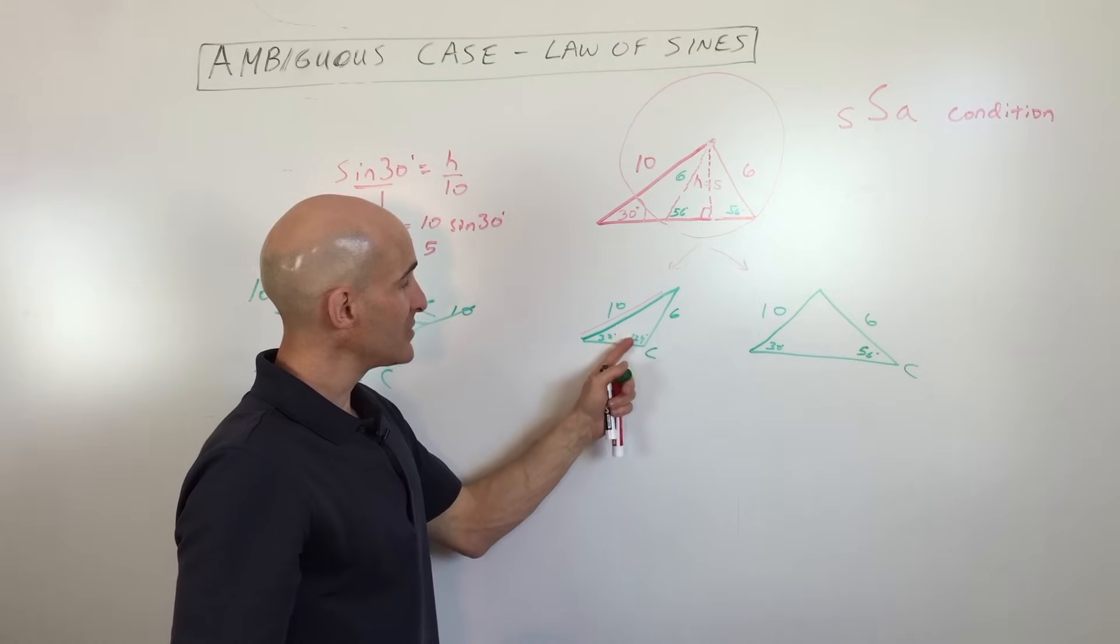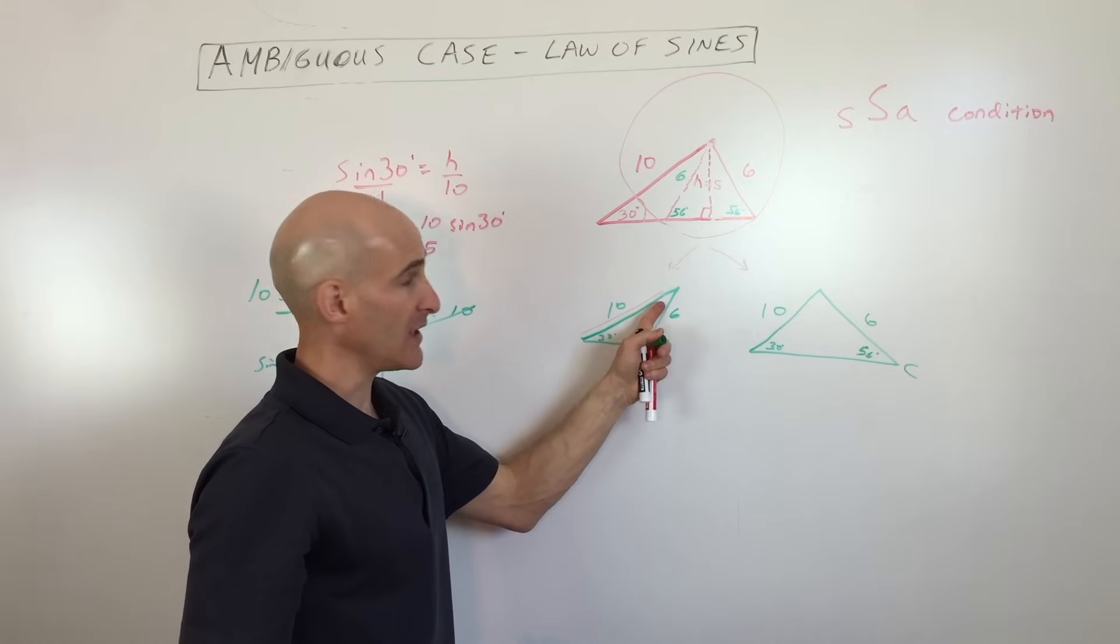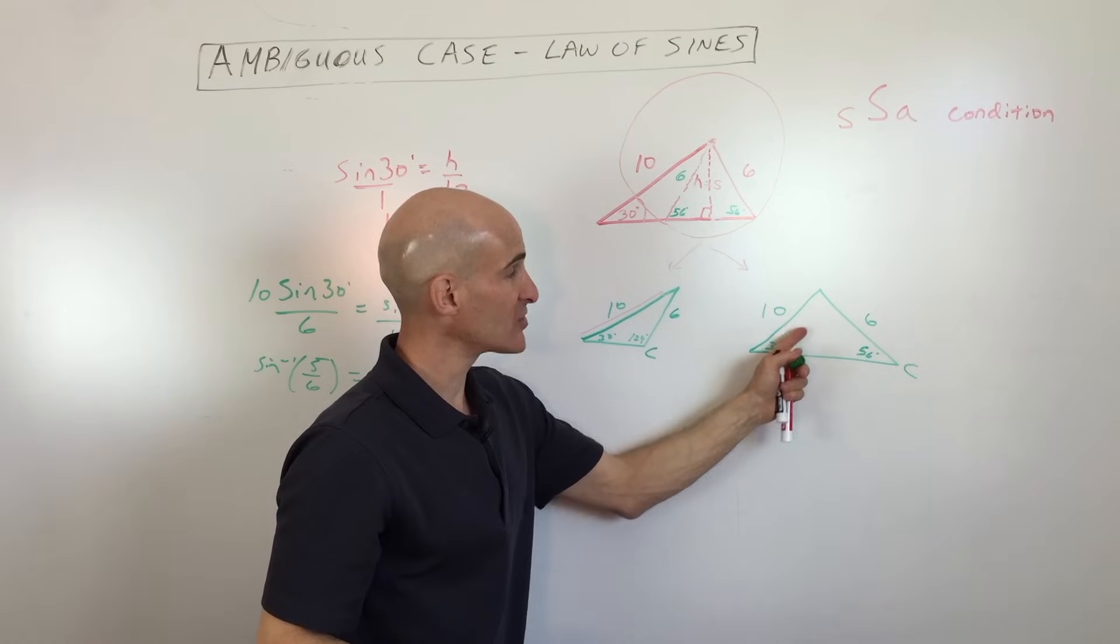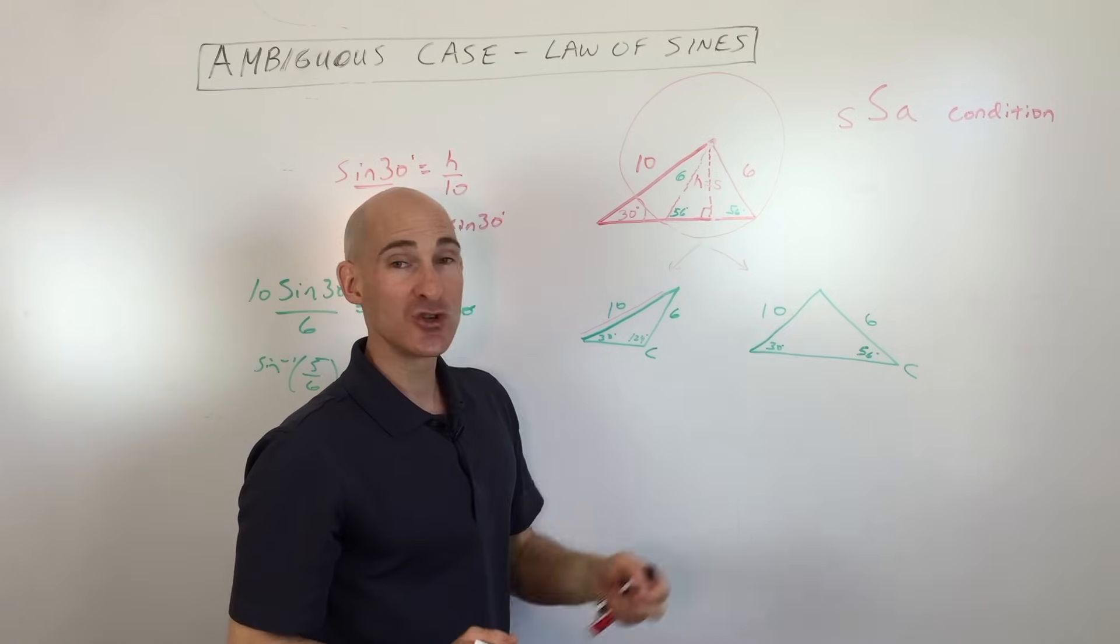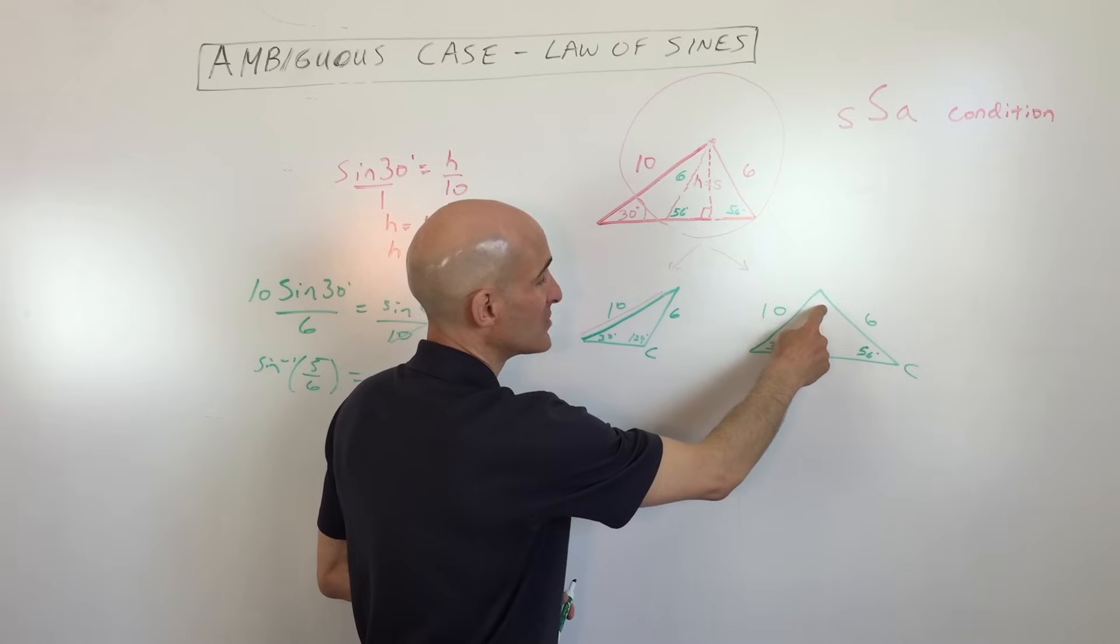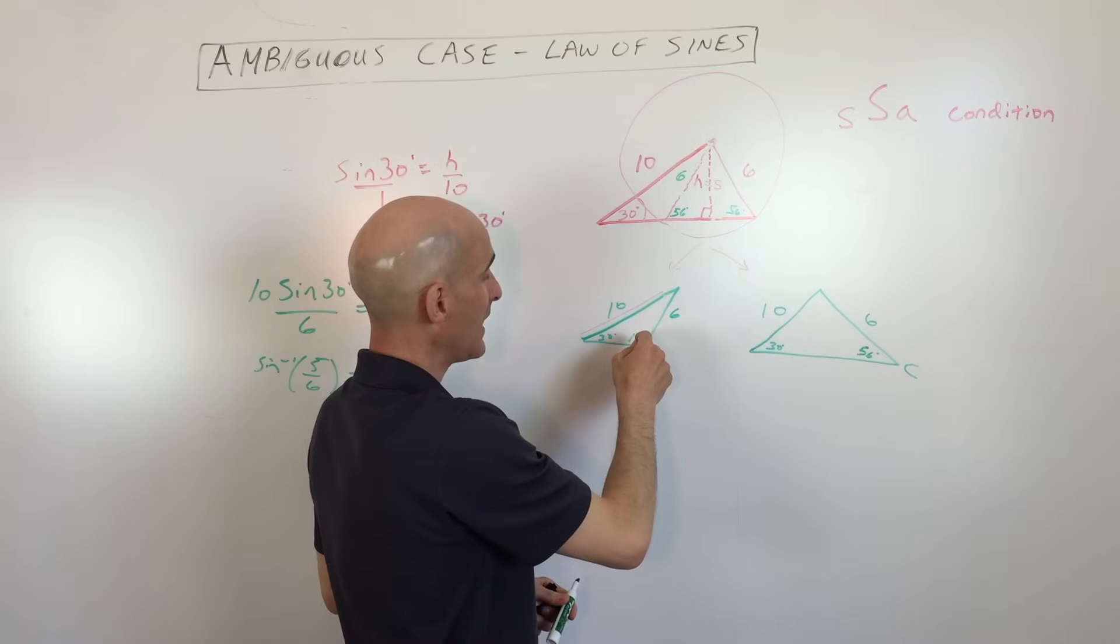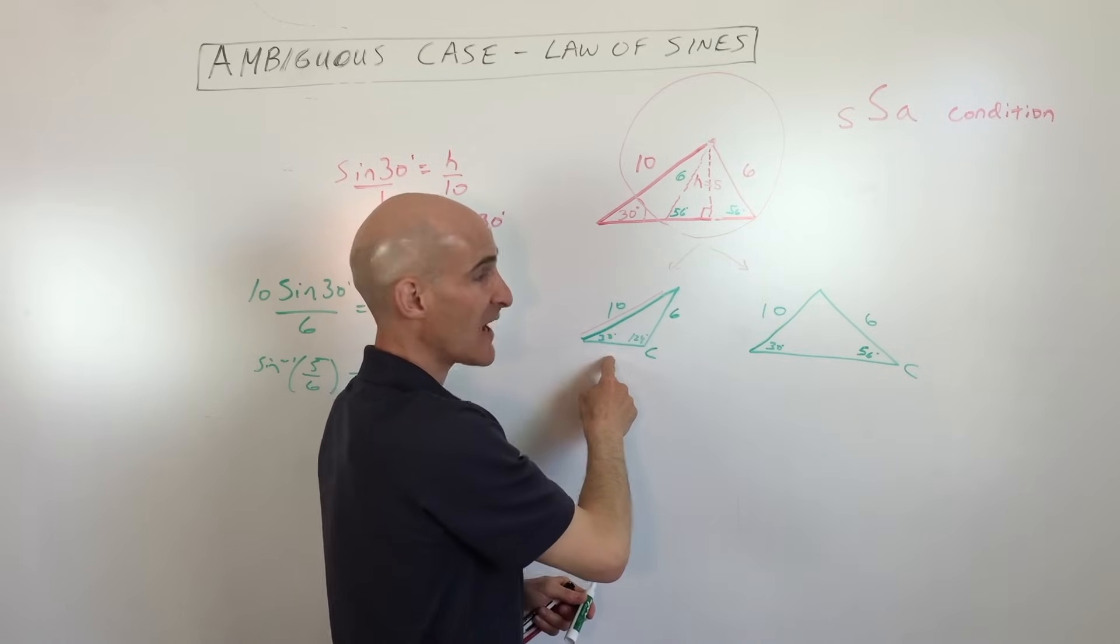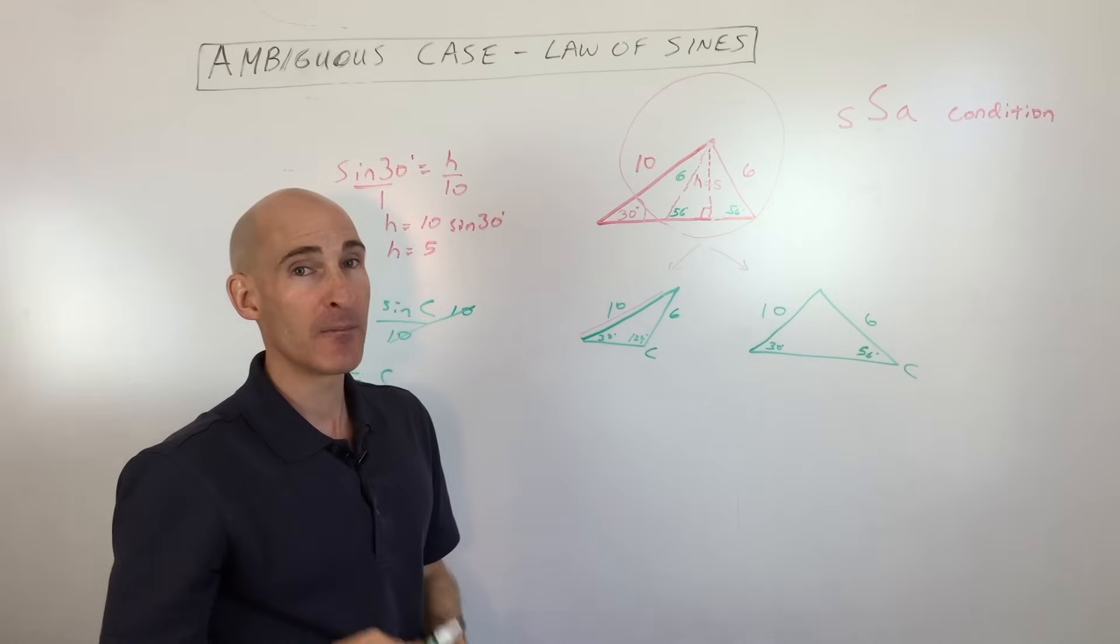Now what you can do is you can add these two angles together and subtract from one eighty. Same thing here, add these two angles together, subtract from one eighty. And then what you would do is you would do the law of sines one more time, using this angle on this side and this angle here and this side to solve for that missing side.